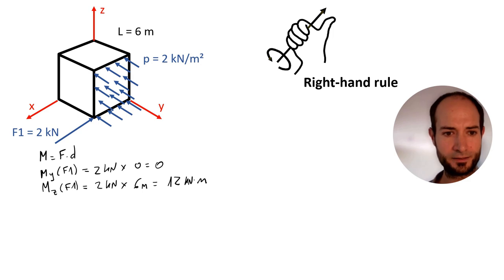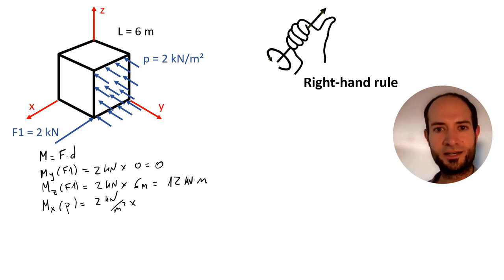And now p over the face of the cube. It's parallel to axis y, so it may cause moments around x and z. 2 kilonewton per meter square. What's the total load? 2 kN per meter square times the area of the face, so we have 6 meters times 6 meters. That's the total f. And then the distance. As before for the line load, it's going to be applied at the center of the face.